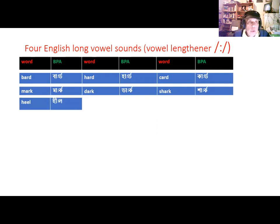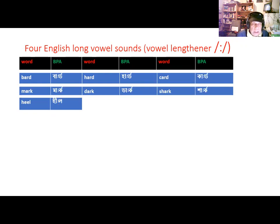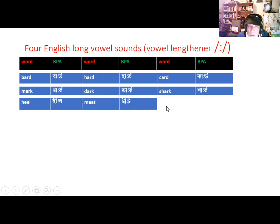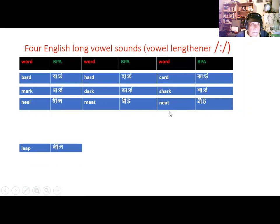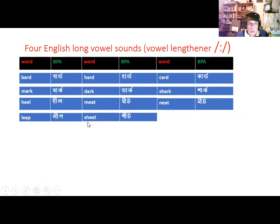Now we will look at words which contain the long vowel sound E. We are using the colon — the vowel lengthener — to lengthen the E sound. H-E-E-L, heel. M-E-E-T, meet. N-E-A-T, neat. L-E-A-P, leap. Keep. S-H-E-E-T, sheet. H-E-A-T, heat.